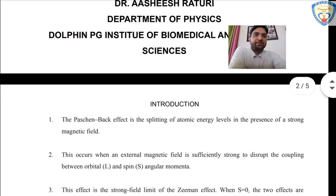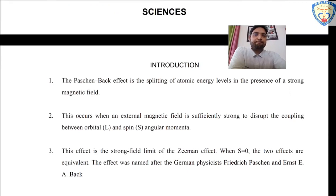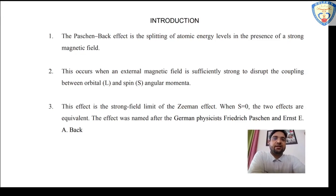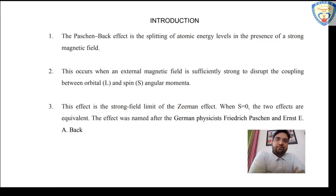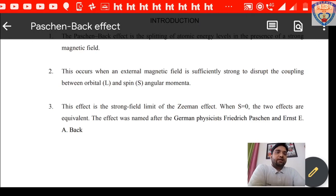When we consider the Paschen-Back effect, it is the splitting of the atomic energy levels in the presence of a strong magnetic field. There is a clear difference between the magnetic field applied in the Zeeman effect and in the Paschen-Back effect. This occurs when the external magnetic field is sufficiently strong to disrupt the coupling between the orbital angular momentum L and spin angular momentum S. This is a very important point in the Paschen-Back effect.